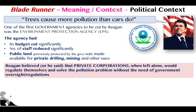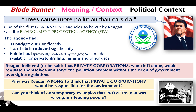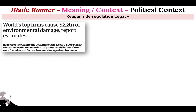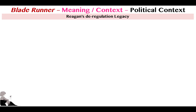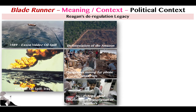Reagan believed that private corporations, when left alone, would regulate themselves and solve the pollution problem without government. The reality is there's no way a private corporation would look after the environment without very strict penalties imposed by governments. The deregulation of the environment led to a rise in man-made ecological disasters — it allowed companies like BP to drill in certain places, causing massive ecological disasters. On screen there are loads of examples of ecological disasters that have happened since Reagan's policies were enacted.